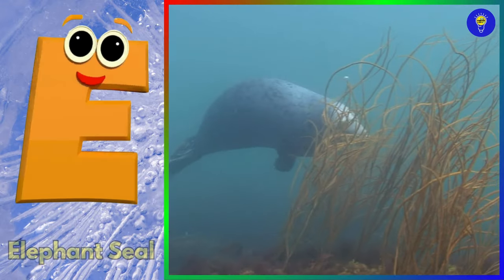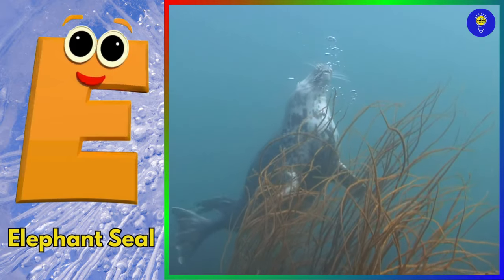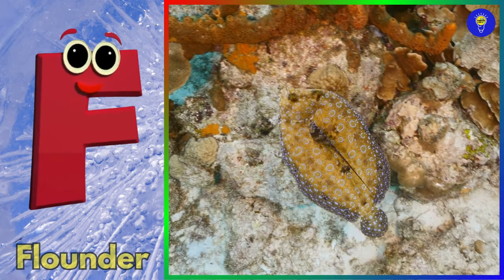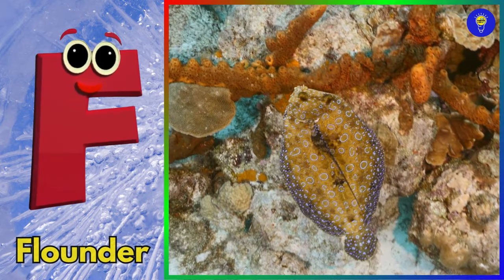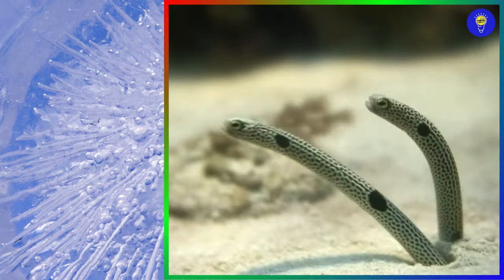E is for elephant seal. Eh, eh, elephant seal. F is for flounder. Fuh, fuh, flounder.